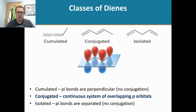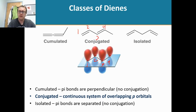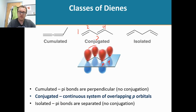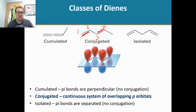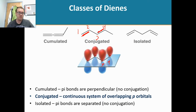In a conjugated molecule, focusing on just the four carbons — one, two, three, four — each of those four carbons has a p orbital. Those p orbitals are responsible for the pi bonds. When we look at just atomic orbitals, the two p orbitals on carbons one and two are responsible for one pi bond, and the two on carbons three and four are responsible for the other.